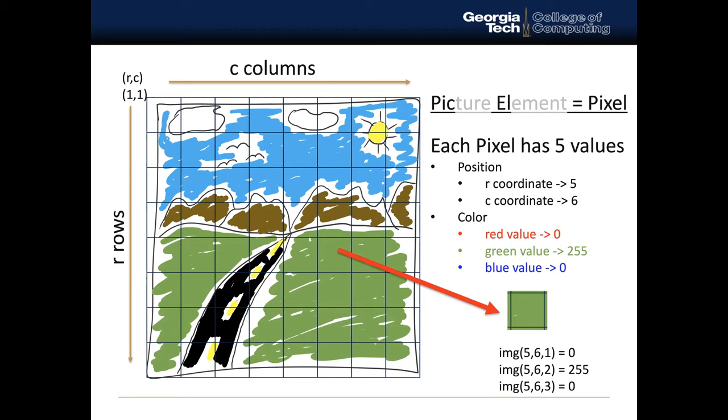We'll have an R coordinate, a C coordinate, and then we're going to have a color value. And the colors are based upon a red value, a green value, and a blue value.